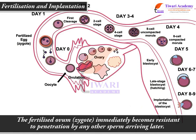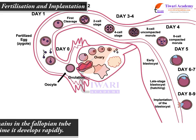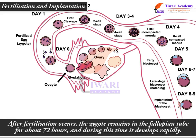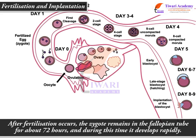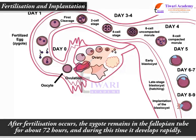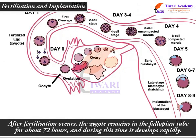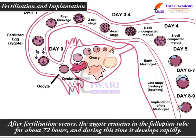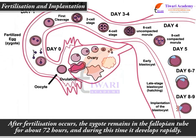The fertilized ovum, called the zygote, immediately becomes resistant to penetration by any other sperm arriving later. After fertilization occurs, the zygote remains in the fallopian tube for about 72 hours and during this time it develops rapidly.